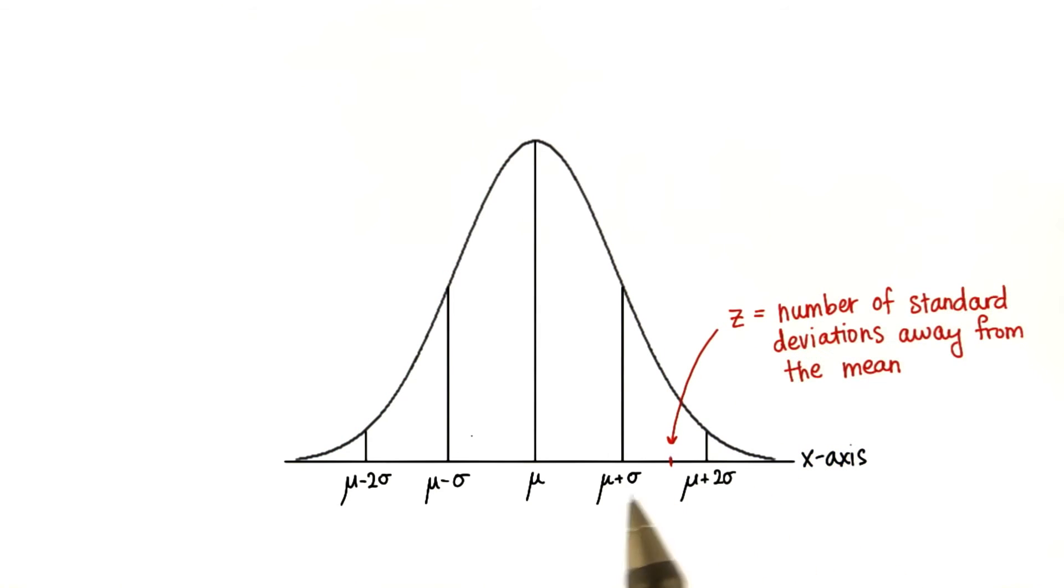For example, if we find that a value is one standard deviation away from the mean, then no matter what normal distribution we have, we know that approximately 84% are less than that value.